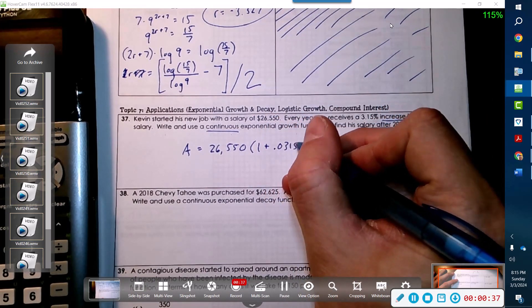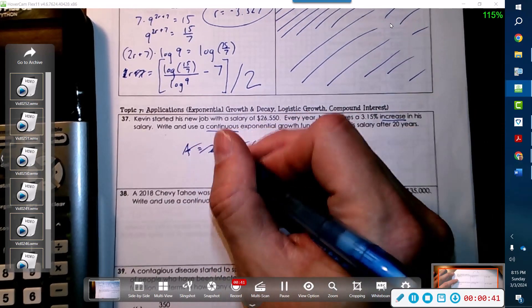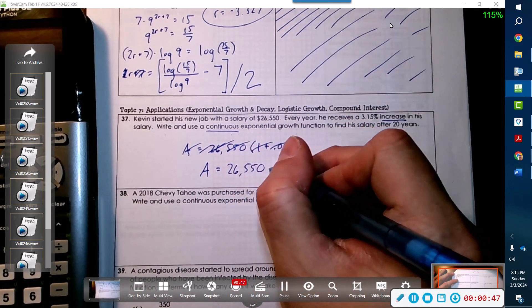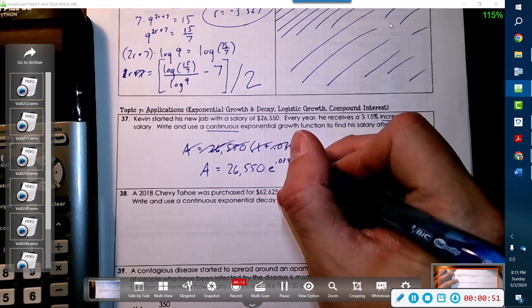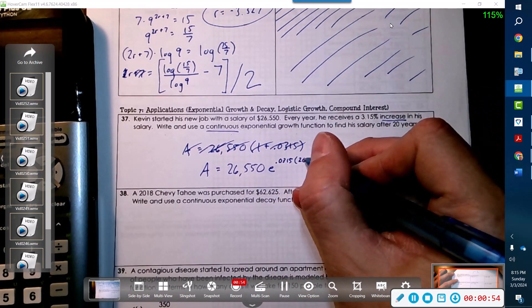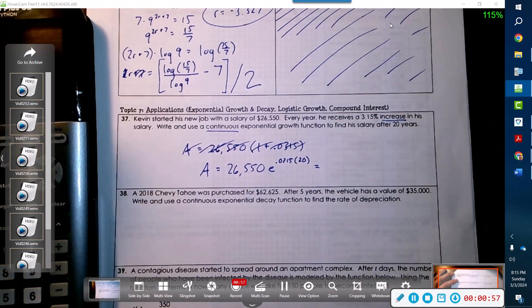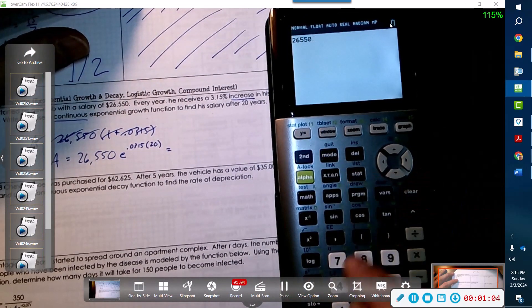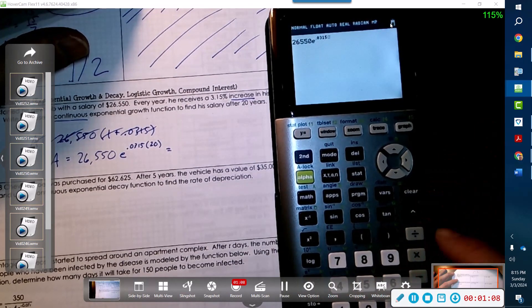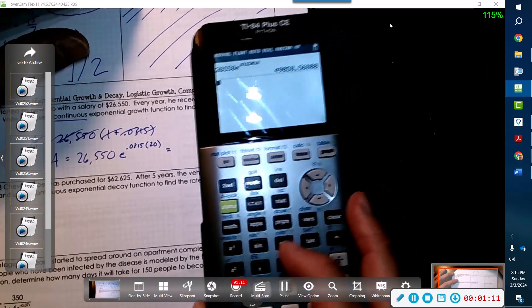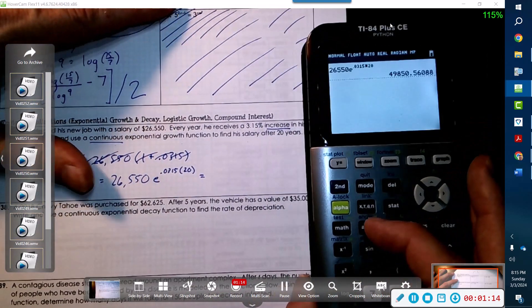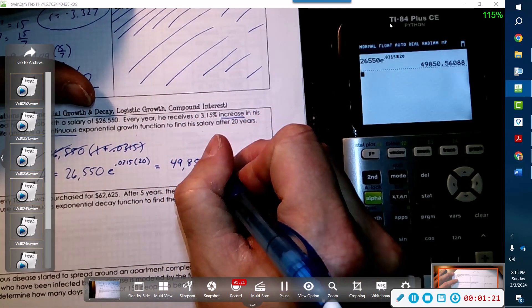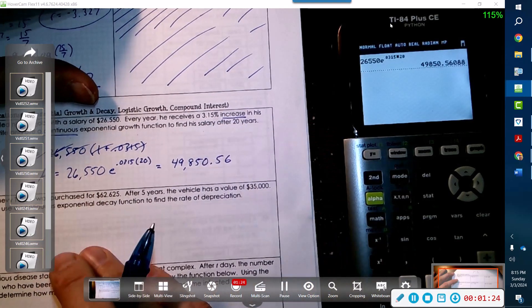So we're gonna start off with 26,550. He receives 1 plus - wait, it's continuous, isn't it? Okay, so we start off with 26,550 times e to the 0.0315 times 20. I missed the word continuous there. Then we'll make sure this makes sense - is he making around almost $50,000? That seems reasonable considering this rate.